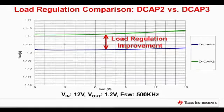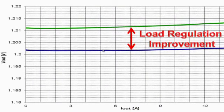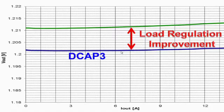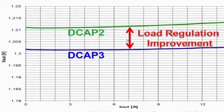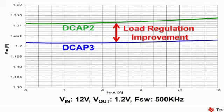What you see on this slide here is the significant load regulation improvement, DC accuracy improvement between DCAP3, which is the blue line, versus DCAP2, which is the green line here. This is a 12-volt input, 15-amp output converter, switching at 500 kHz, powering at 1.2-volt output.